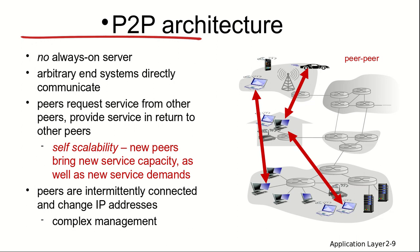One solution to this issue is a directory listing service — one central server that holds information about available peers and automatically tracks changes to their IP addresses. If a peer changes its IP address, a central repository exists through which you can check the latest IP address. Some torrent applications use this approach.